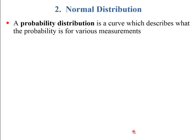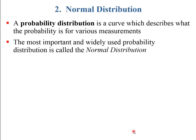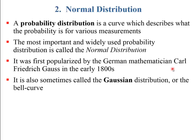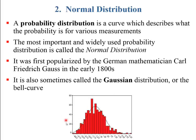The second section is the normal distribution. A probability distribution curve describes the probability for various measurements — that's the histogram we just showed. The most popular and widely used distribution is called the normal distribution, also called the Gaussian, because it was first popularized by Carl Friedrich Gauss. Sometimes it's called the bell curve because it is shaped a little bit like a bell. Real histograms can be approximated by a Gaussian, though they're often much messier.